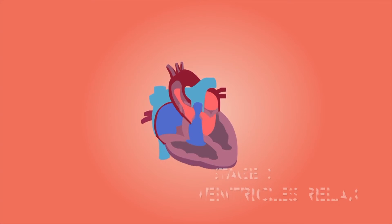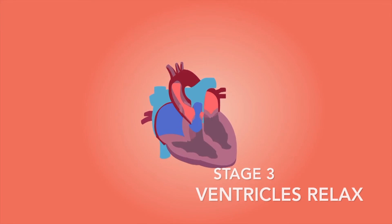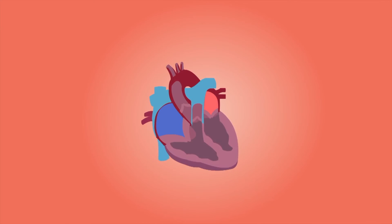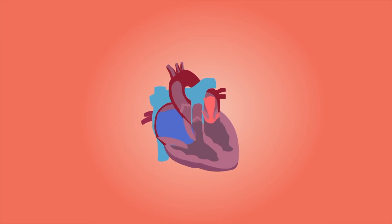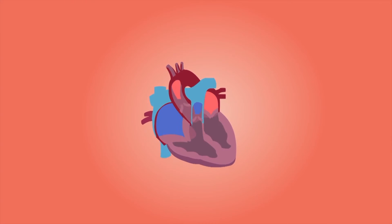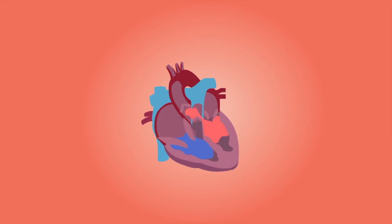Stage 3: Immediately following ventricular systole, both ventricles and atria relax for a short time. The higher pressure in the aorta and pulmonary artery than in the ventricles closes the semilunar valves, preventing the backflow of blood. Higher pressure in the vena cava and pulmonary vein results in the refilling of the atria. The cycle is now complete, returning to Stage 1.